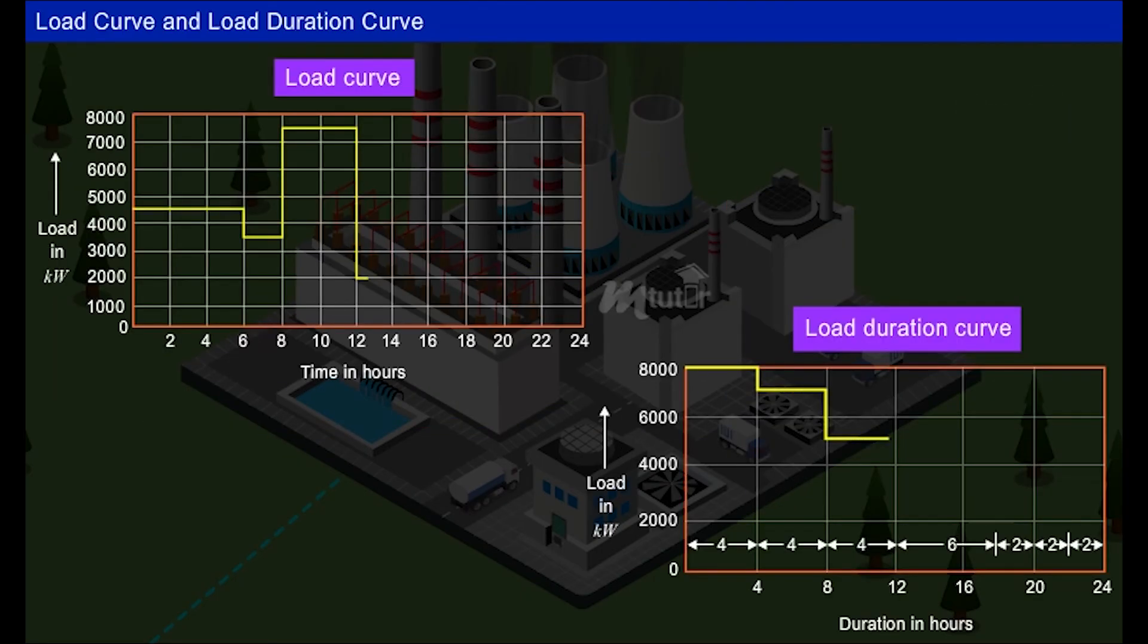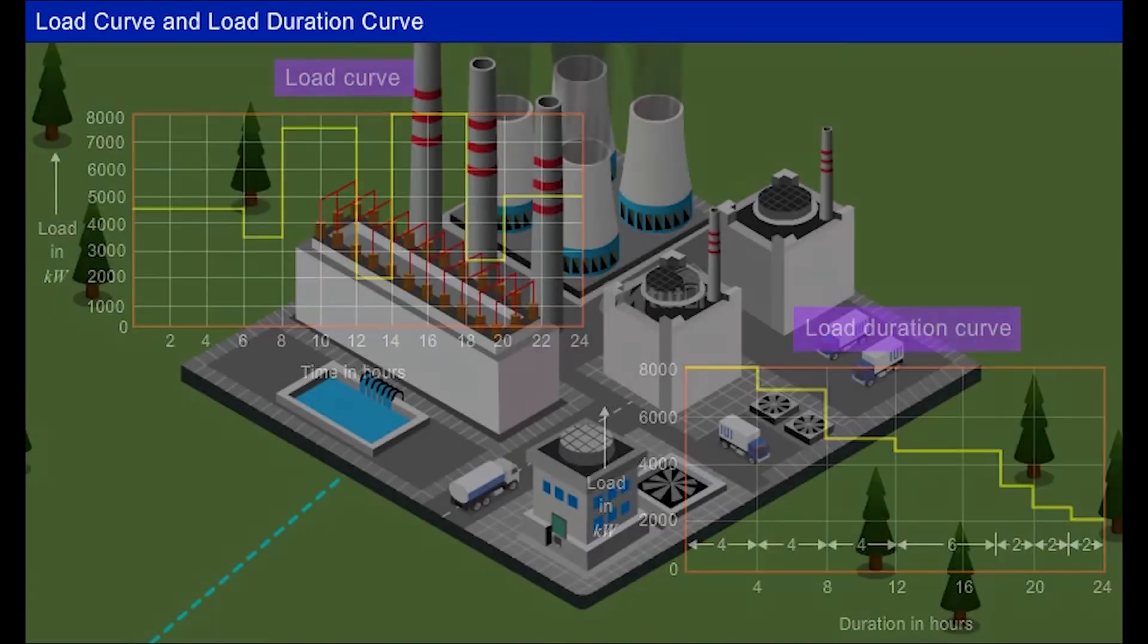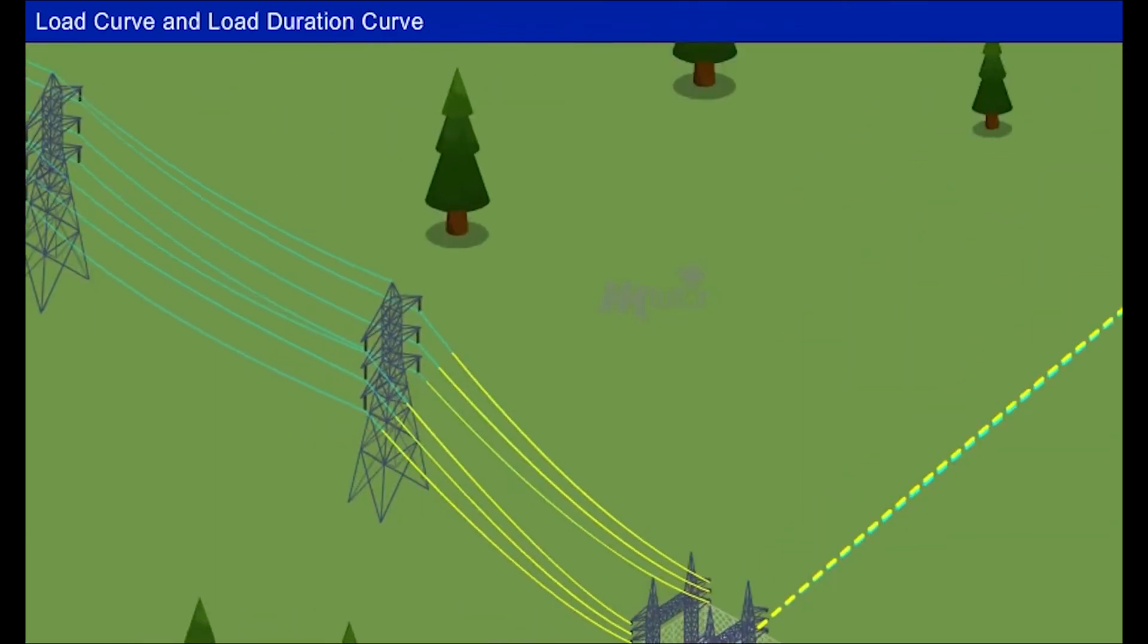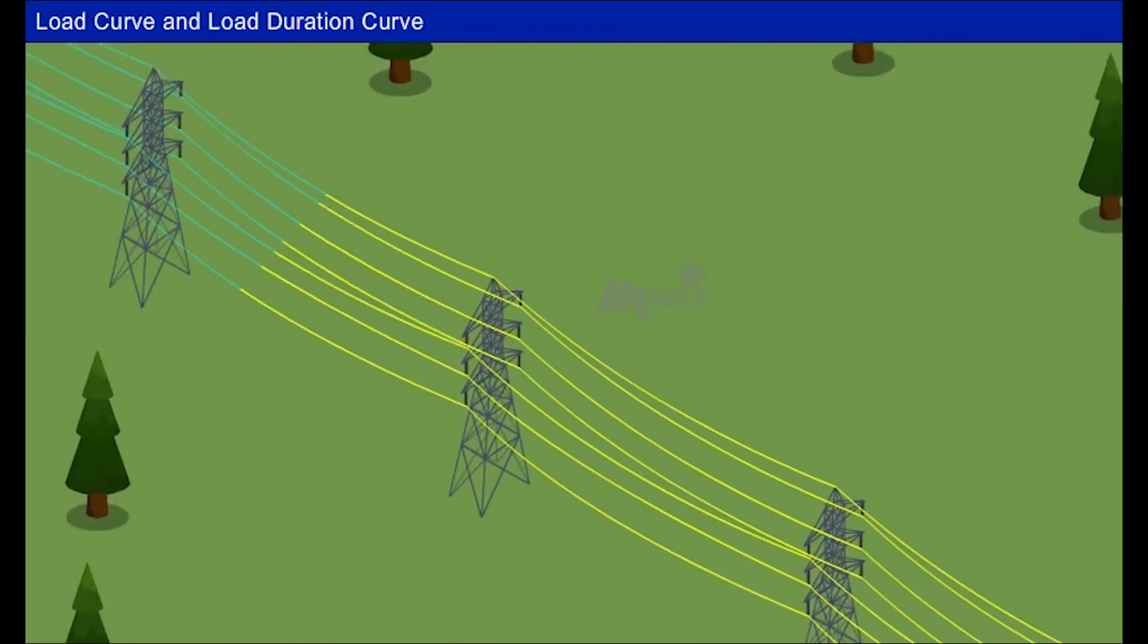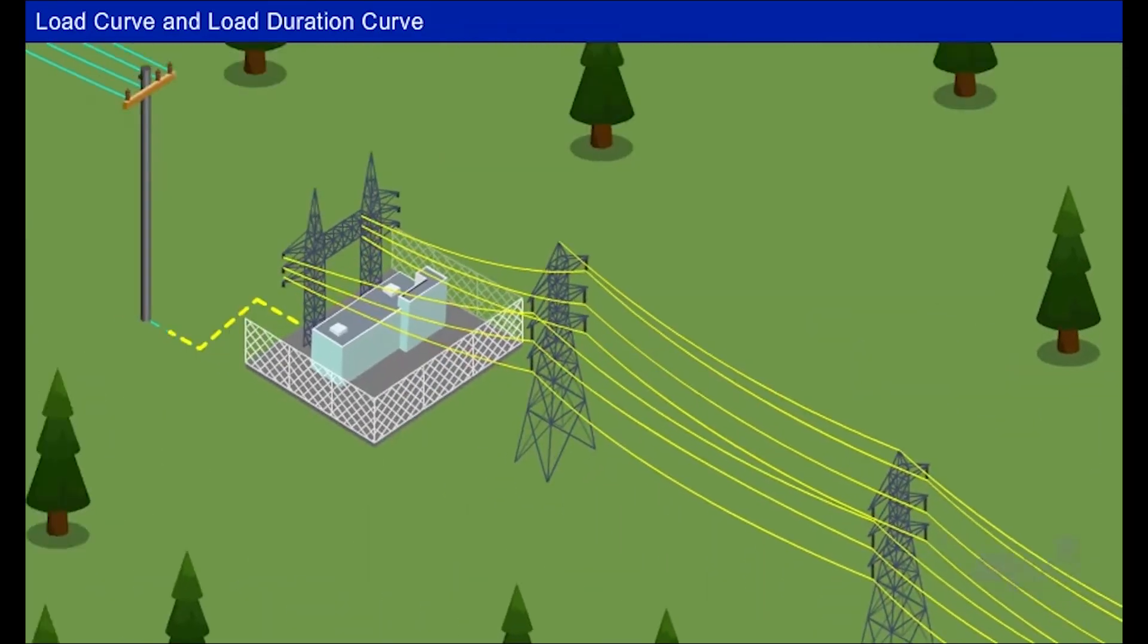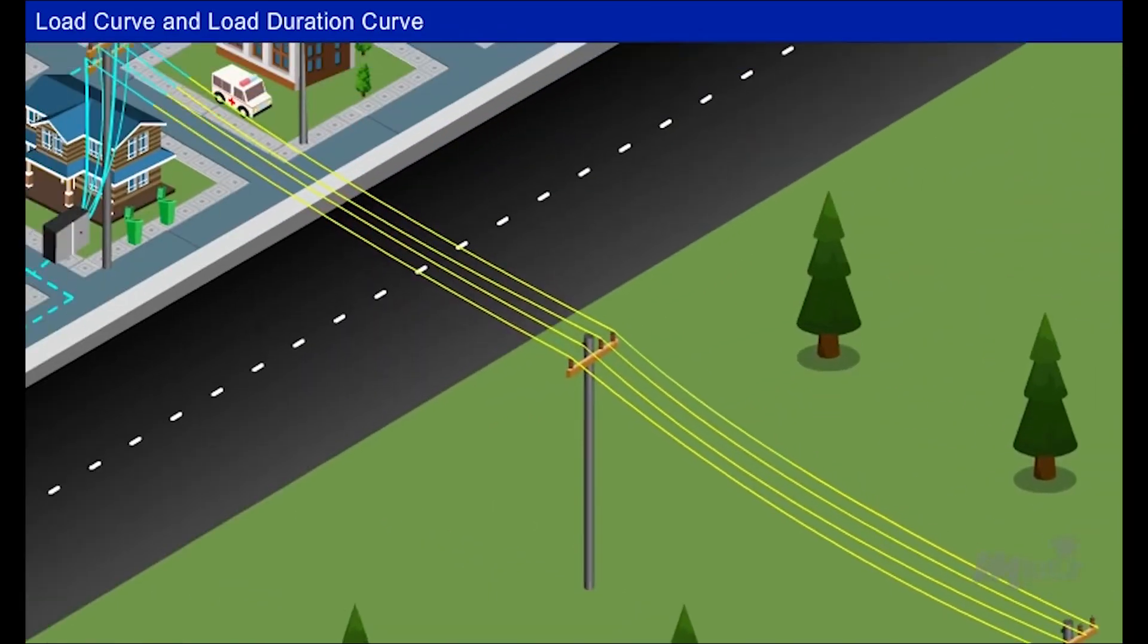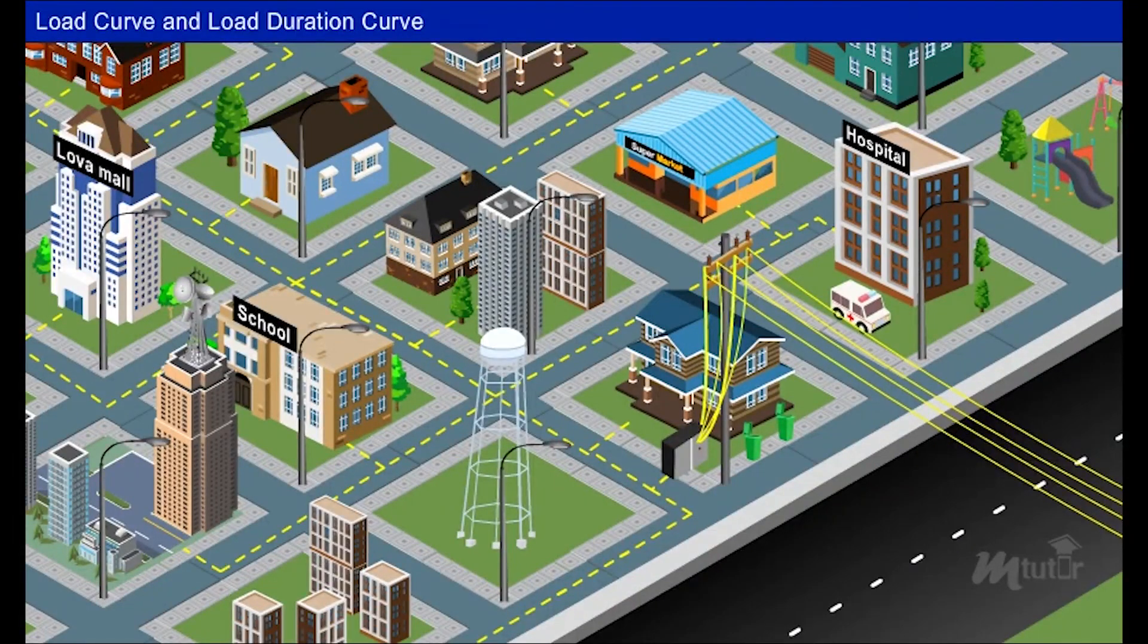Using this load curve and load duration curve, the operation of the generating units in the power station supplying power to Lovacity is scheduled in order to meet out the load demands. In this way, the infrastructure elements of the Lovacity are maintained efficiently.